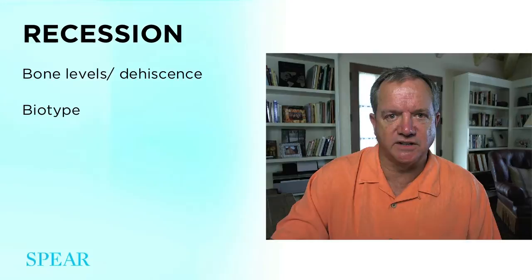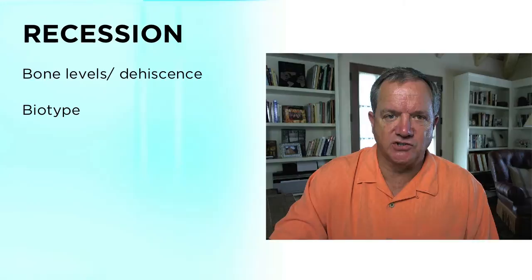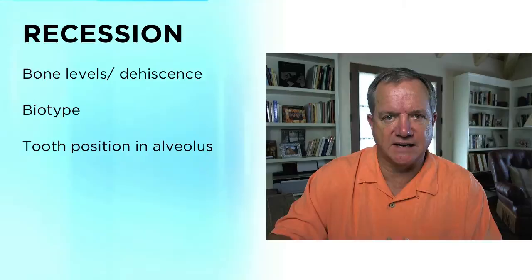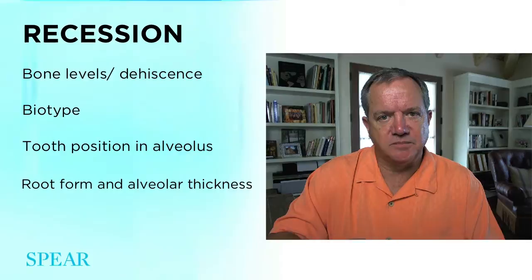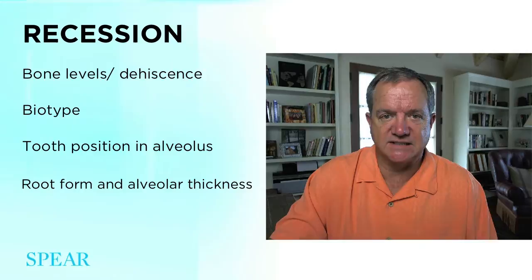Most important of all is bone levels. If the bone is there, the tissue simply can't recede into bone. We also have variations in patients — so-called biotypes — where we have thick gingiva and thin gingiva. The thicker the gingiva, the much less likely it is to recede. We also have to understand that tooth position within the alveolar housing has a big impact. The more labially positioned the tooth, the more likely there's a dehiscence and the thinner the tissue. The more lingual the tooth, the thicker the bone, the less likely the dehiscence, and the less likely recession. Finally, root form has a big impact — if you have large roots and a very slender alveolus, you're just very susceptible to recession.